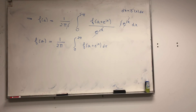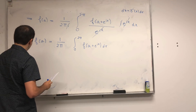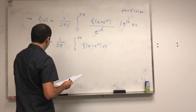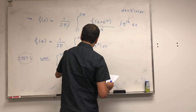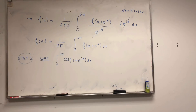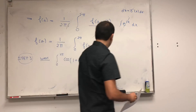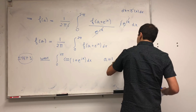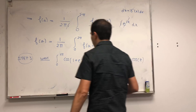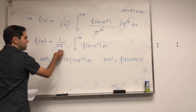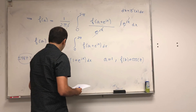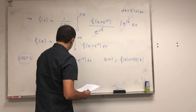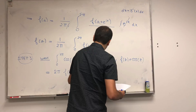So now we have our Cauchy integral formula, but in a way that's useful to us. Namely, f of a is 1 over 2π, integral from 0 to 2π, f of a plus e^(ix) dx. Now the question is, how in the world can we use this with our function? So this is our last step. Remember, what we really want is integral from 0 to 2π of cosine of 1 plus e^(ix) dx. Let a be 1 and let f of z be cosine of z.